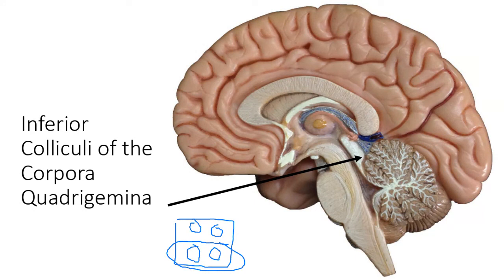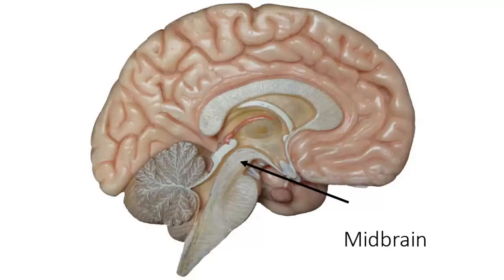Those two bottom bumps have to do with auditory reflexes. If someone calls my name from behind me, I hear them on that side and turn that same direction — that's utilizing the auditory reflex through that region. There's the midbrain on this model.